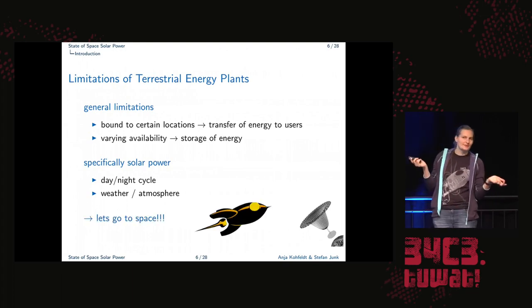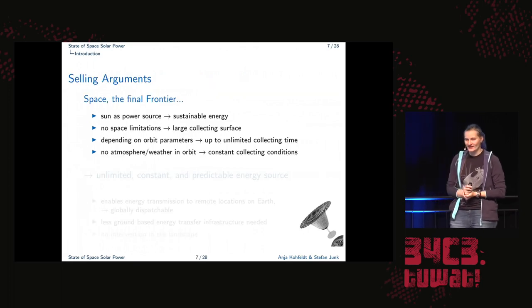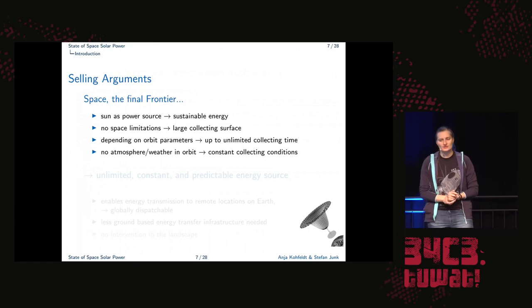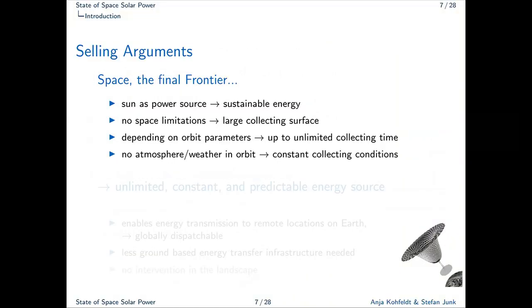There are some selling arguments about space solar power. As I already said, it's sustainable because it's sun-powered. Space, generally, is very, very large. So we can build quite big structures without covering any area on earth. It is possible to have sunlight on our satellites up there all around the clock and we don't have an atmosphere. So there is no weather. So space solar power promises to have an unlimited, constant and predictable energy source. That's cool.